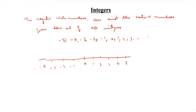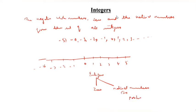What are the classifications of integers? Zero is there. Here are the natural numbers. Natural numbers are positive integers. Here are the negative integers.